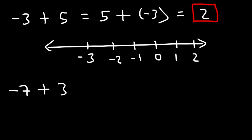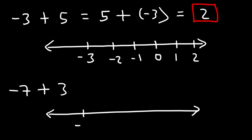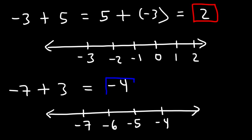Now negative 7 plus 3. Let's start with negative 7 and travel 3 spaces to the right: negative 6, negative 5, negative 4. So negative 7 plus 3 is negative 4. And that's how you can add a negative number with a positive number.